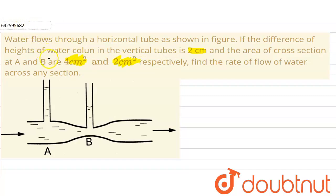In the given question, we have been given that water flows through a horizontal tube and the difference in the height of the water column in the vertical tube is 2 cm. So, this difference in the height H is equal to 2 cm. And the cross sectional area at point A is 4 cm² and at B is 2 cm². Now,